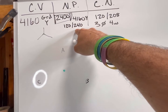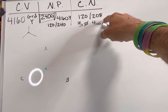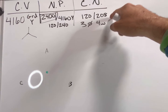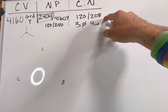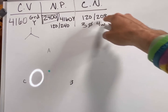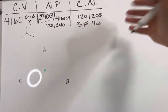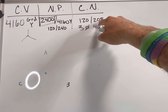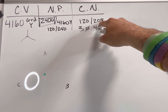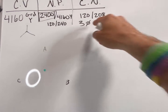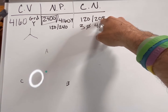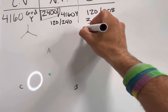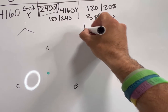I've got a 120/240 secondary and the customer needs 120/208. The customer's needs always determine the secondary hookup. So 120/208 — remember the rule: delta divides evenly. Does 120 divide evenly into 208? No. Therefore the secondary connection is going to be a Y.